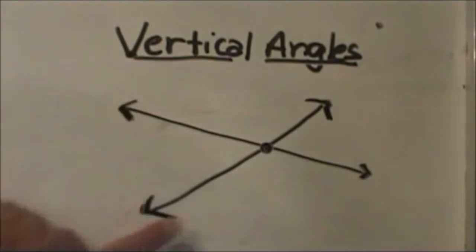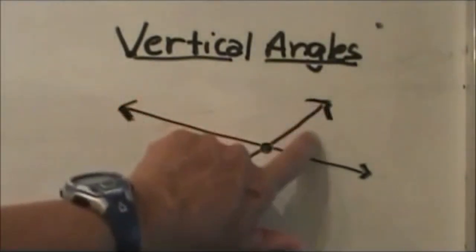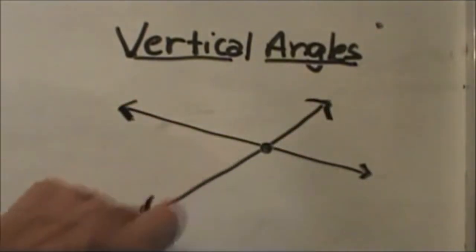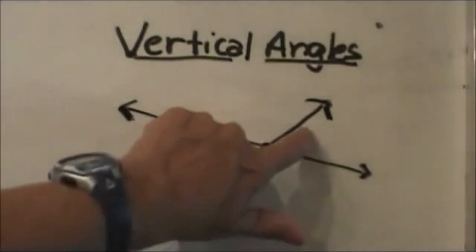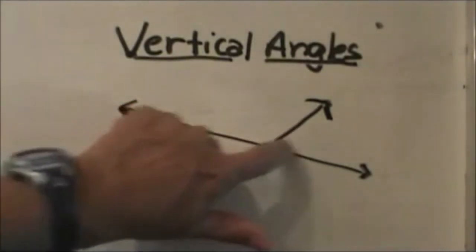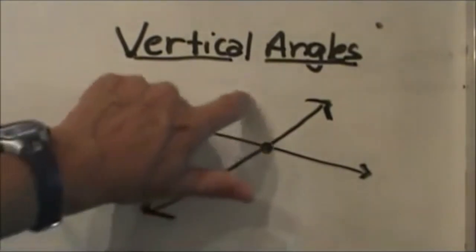Notice I have a line here and I have a line here, and I have one, two, three, four angles. These are the four angles I'm looking at, and my across the street neighbors are these two and these two.